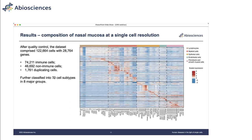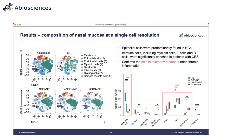We classified the landscape into 73 cell subtypes within eight major groups: lymphocytes, myeloid cells, epithelial cells, endothelial cells, fibroblasts, and smooth muscle cells (SMC). The latter three are considered stromal; the first two are immune cells infiltrating the tissue. Since we have different sample groupings — healthy control and three disease groups — we can compare cell composition under different situations. A key finding is that epithelial cells were predominantly found in healthy controls, meaning disease samples have more immune cells, confirming that immune cells are infiltrating the tissue and causing inflammation consistent with the disease description.